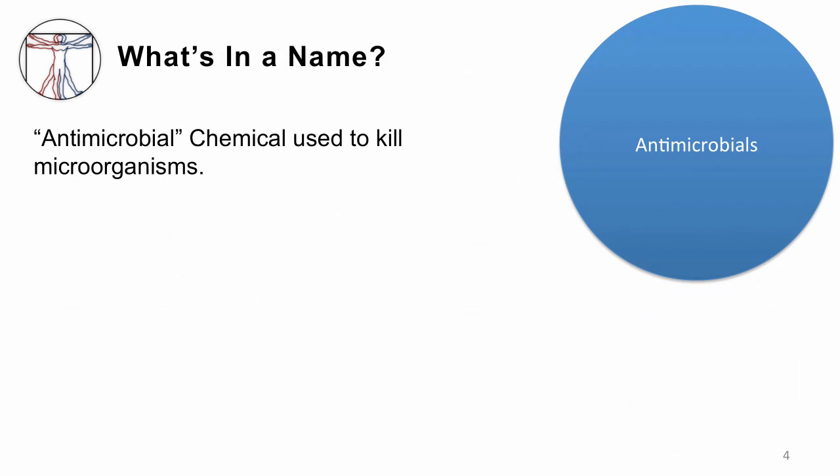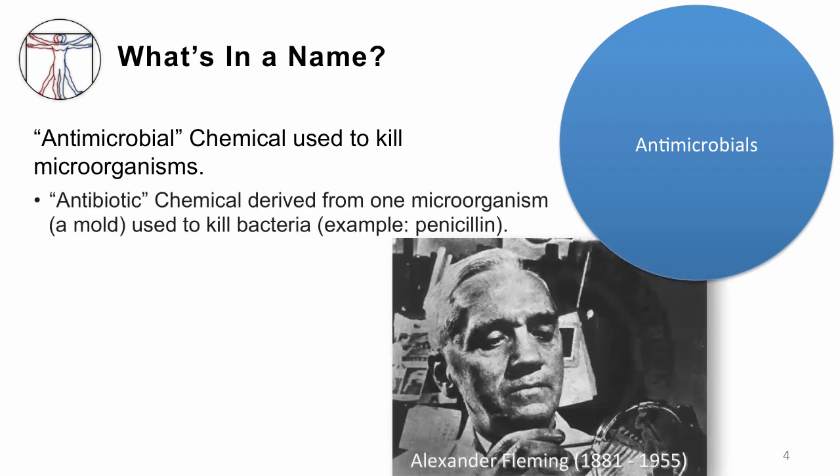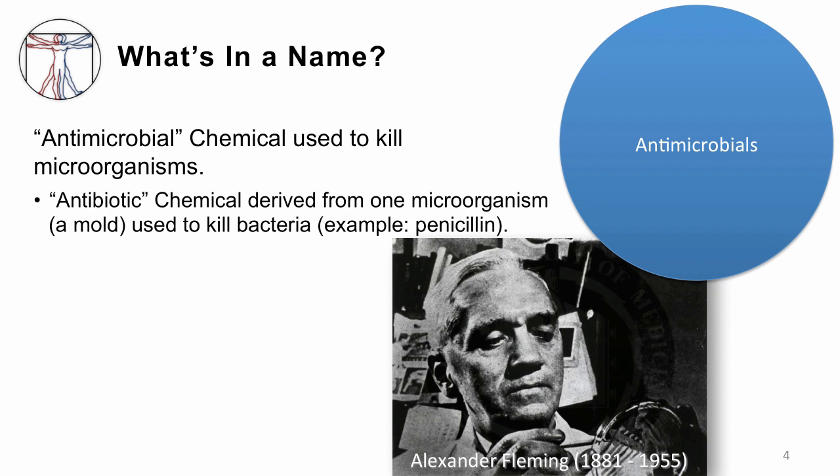We'll talk about that in part two. First of all, what's in a name? An antimicrobial is a chemical that's used to kill microorganisms, and there are a number of subcategories within the antimicrobial family. Most commonly used in clinical medicine: antibiotics. Antibiotics are chemicals that come from other microorganisms, usually molds or streptomyces, and we use them to kill bacteria. The classic example is penicillin, the hallmark beta-lactam antibiotic.